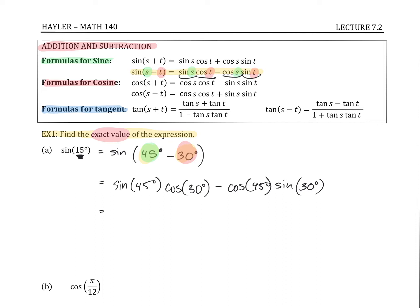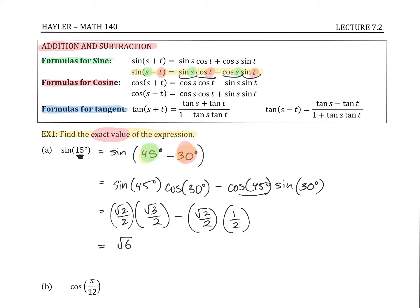Now we can evaluate. Sine of 45 degrees is root 2 over 2. Cosine of 30 degrees is root 3 over 2. Cosine of 45 degrees is root 2 over 2. Sine of 30 degrees is one half. Simplifying, we get root 6 over 4 minus root 2 over 4, which gives us root 6 minus root 2 over 4. We cannot combine those radicals, so that's our answer.